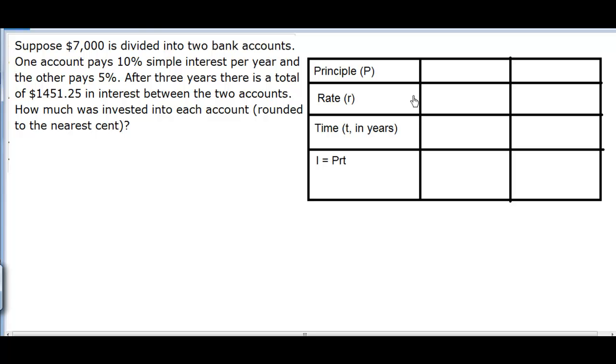So let's begin. Suppose $7,000 is divided into two bank accounts. One account pays 10% simple interest per year and the other pays 5%. After three years, there is a total of $1,451.25 in interest between the two accounts. How much was invested into each account, rounded to the nearest cent?